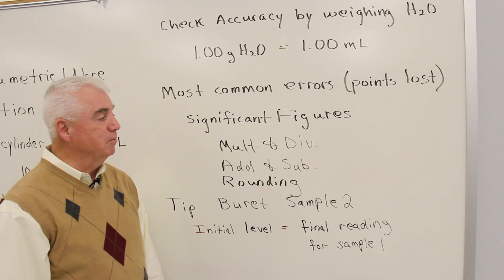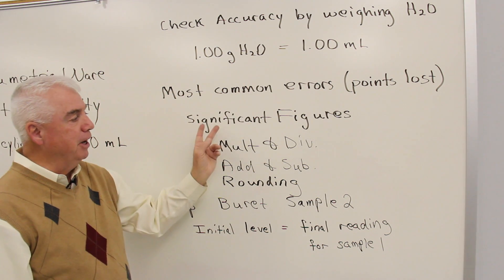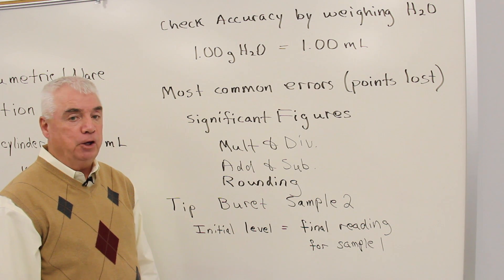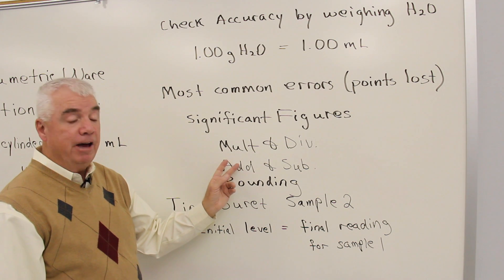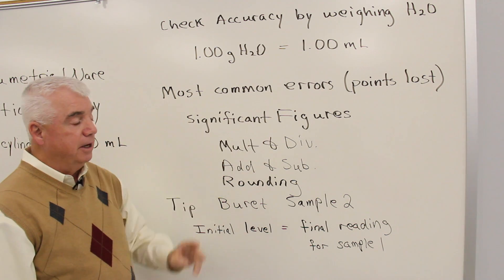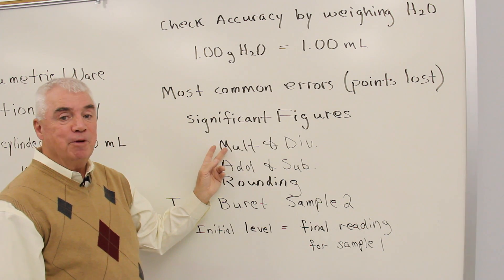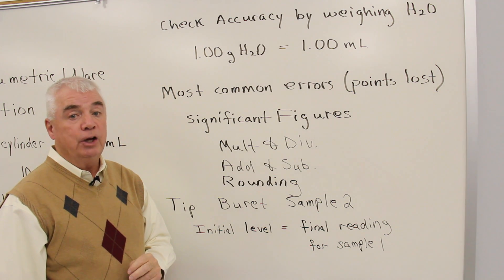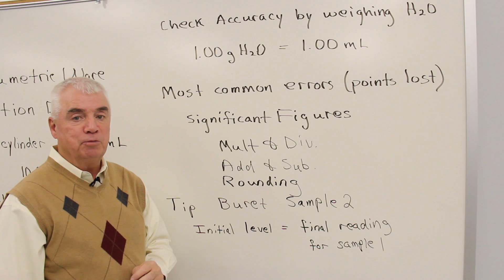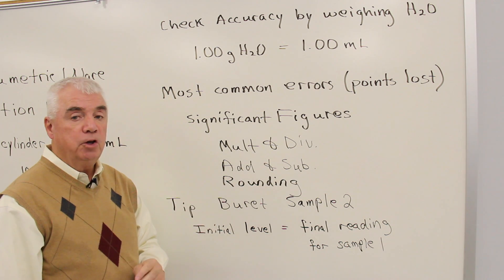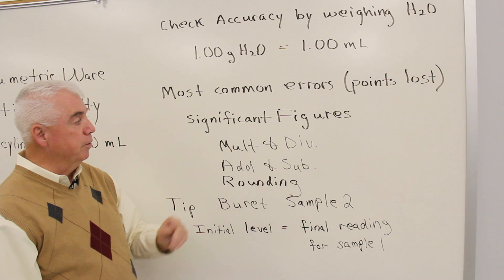I want to give you a heads up about places that you might miss points or lose points, and the most common errors are again dealing with significant figures. I don't think you'll have any trouble reading the values and the burette and so forth, but interpreting the numbers maybe will cause you a little bit of difficulty. So again, remember that for multiplying and dividing you count significant figures, for adding and subtracting, you count decimal places, and in some cases you'll be rounding. So review your experiences with rounding too.